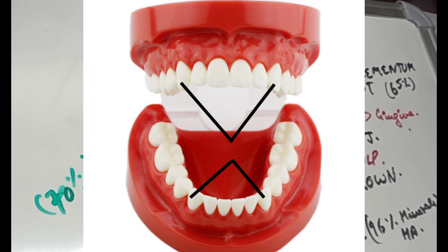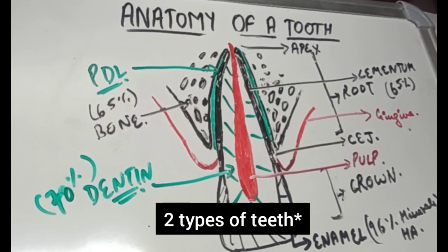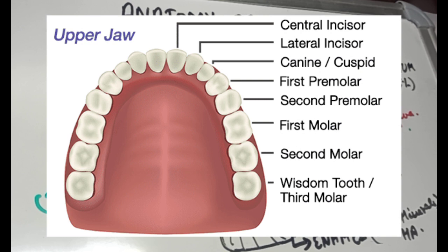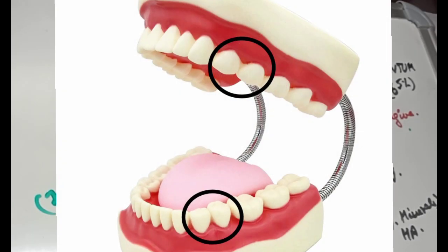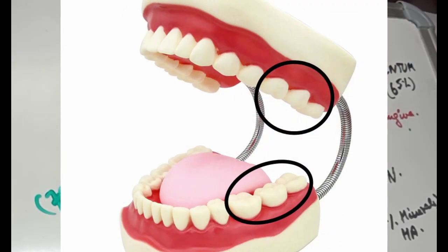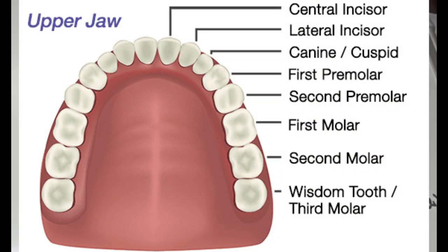Canines are next to the incisors and are used for tearing and holding food, and also for aesthetic purposes. The incisors and canines together are referred to as the anterior teeth. Then we have the premolars — the teeth present behind the canines and in front of the molars — used for tearing, holding, and grinding food. Finally, the molar teeth are used for chewing and mastication of food. Premolars and molars together are referred to as the posterior teeth as they are at the back.